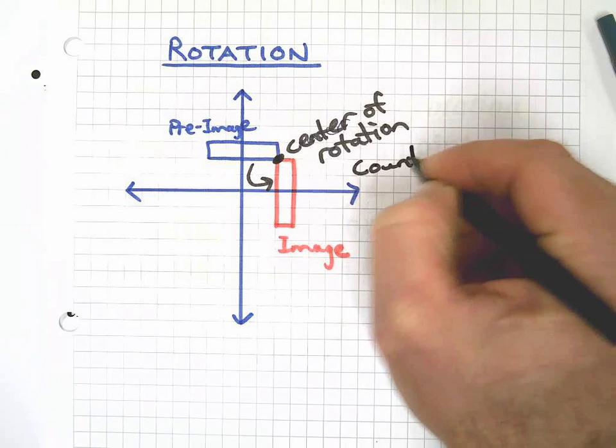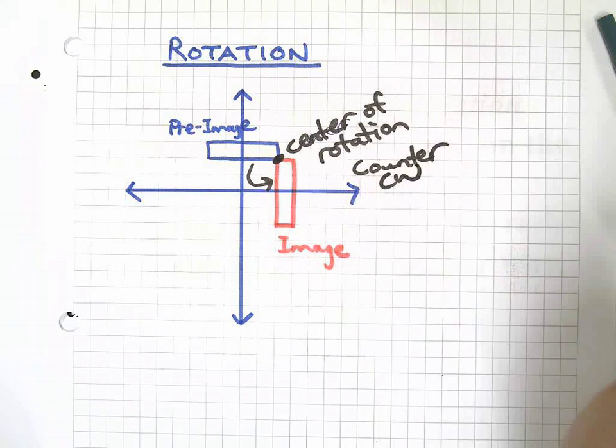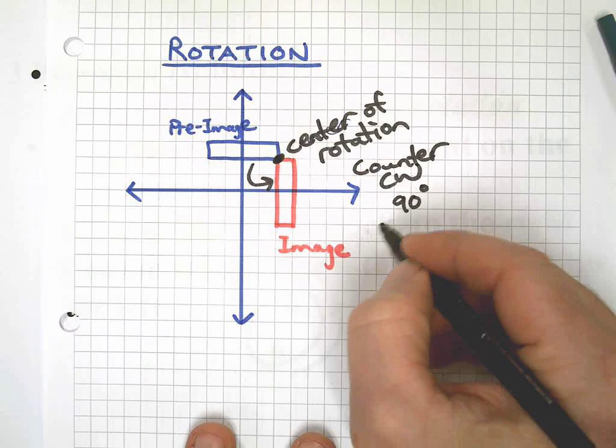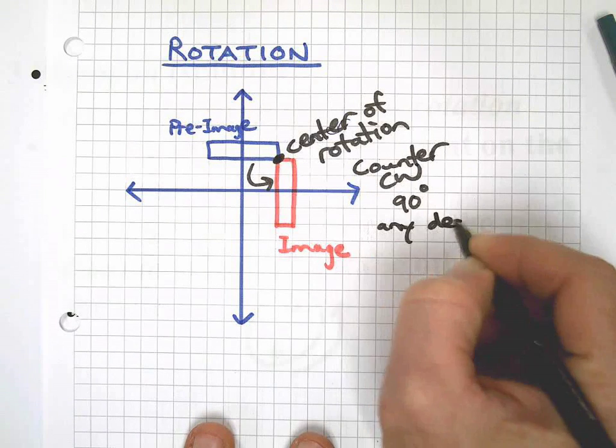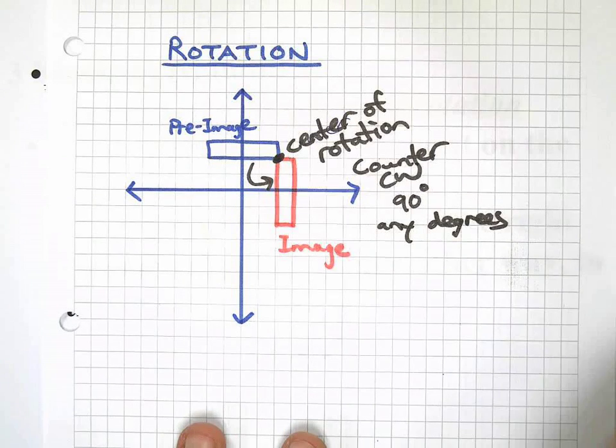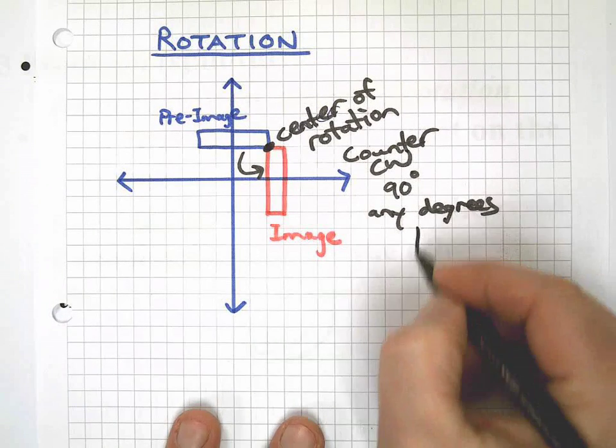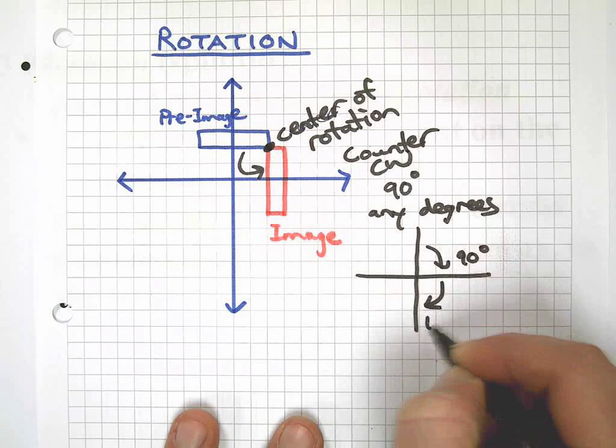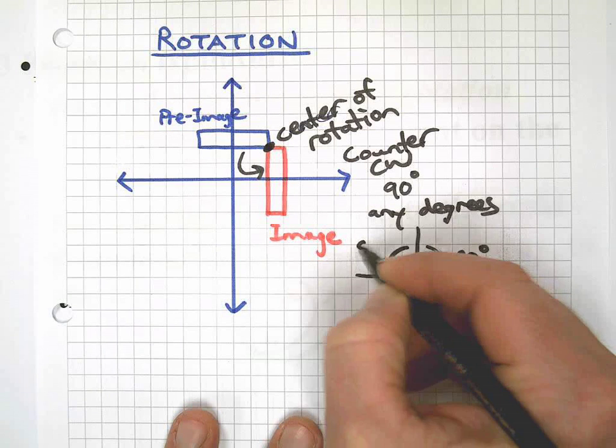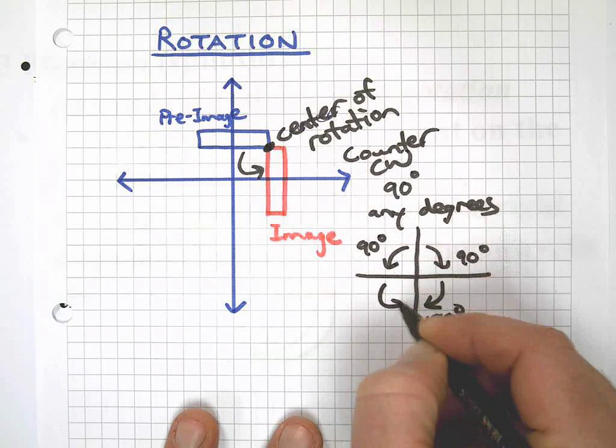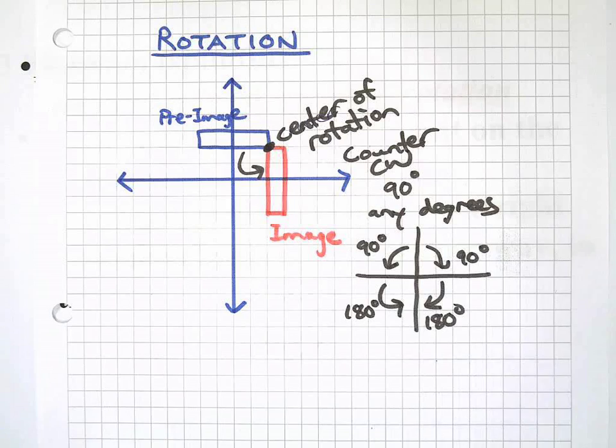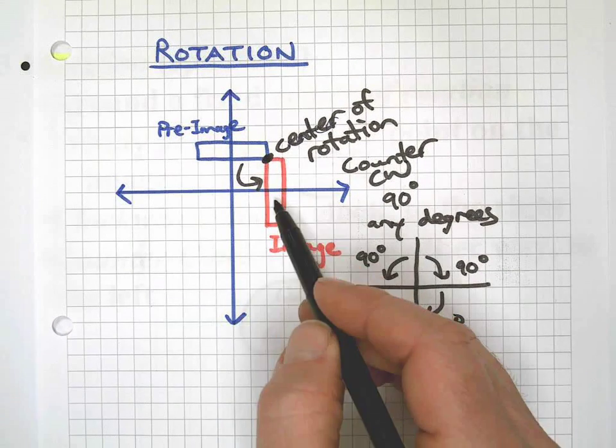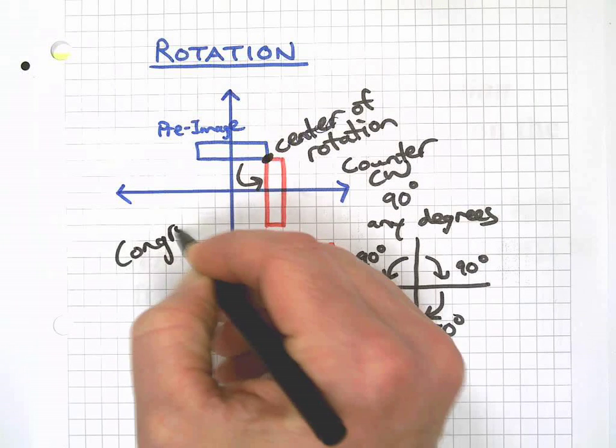So that's the point around which I rotate it. I went counterclockwise and I went 90 degrees. These are, you can use any degrees. Typically in problems out of textbooks or on paper, you're going to see 90, 180, either left or right.